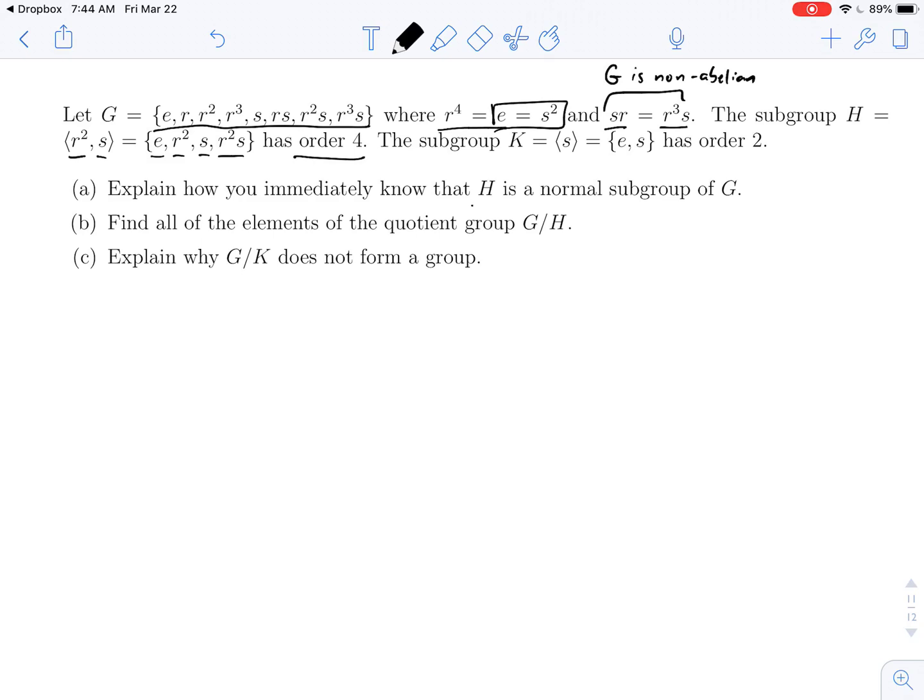So the first question is, how do you know that H is a normal subgroup of G? Well, we know that the order of H is equal to four. We know that the order of G is equal to eight. Well, four is half of eight. And we have a theorem in class, which tells us if the index of H and G is equal to two, and remember the index for finite groups is equal to the quotient of their orders, then H is a normal subgroup of G. So that's how we immediately know. We don't have to check cosets or anything. We just notice it has index two.